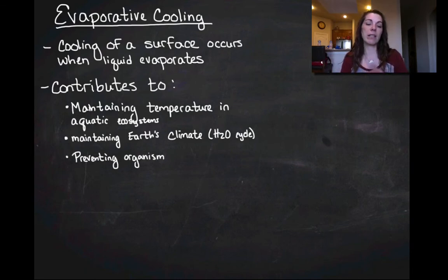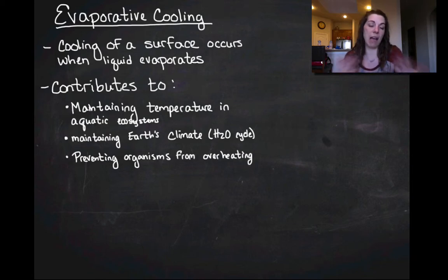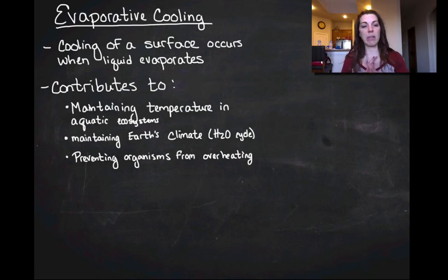And then the last thing we want to talk about is preventing organisms from overheating because they're actually evaporatively cooling by sweating. So you can imagine that you are better at evaporative cooling than, say, a dog is, because you can sweat and you have all of this skin surface that evaporation can take place off of, whereas a dog is going to be covered in fur and it's not going to be as efficient at evaporative cooling.